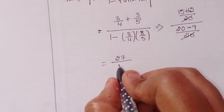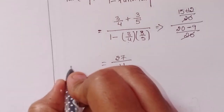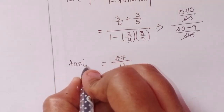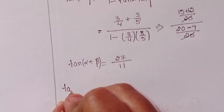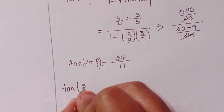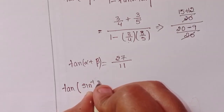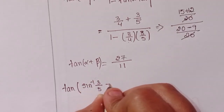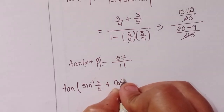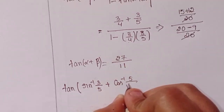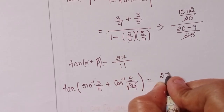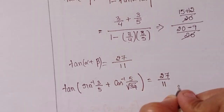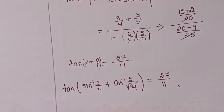So tan of alpha plus beta equals 27 by 11. Therefore tan of sine inverse 3 by 5 plus cos inverse 5 by root 34 equals 27 by 11. This is the second solution.